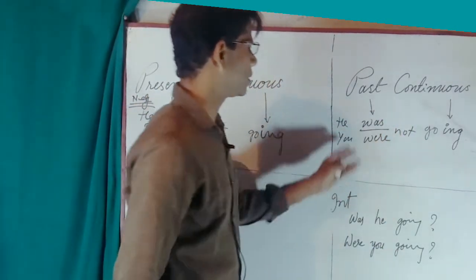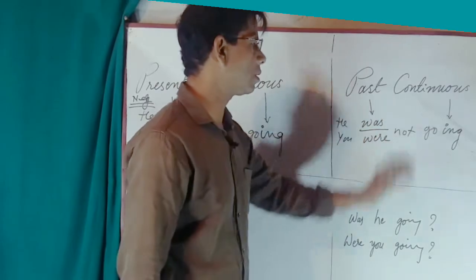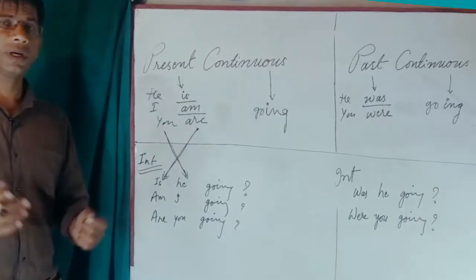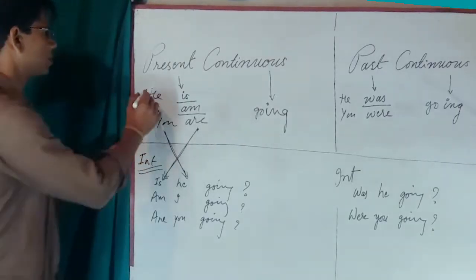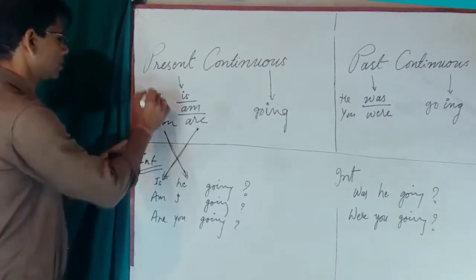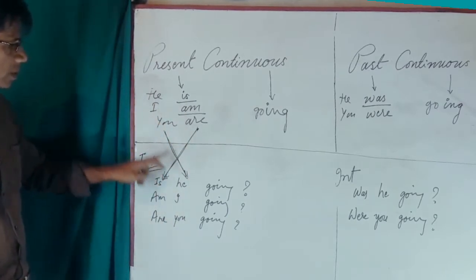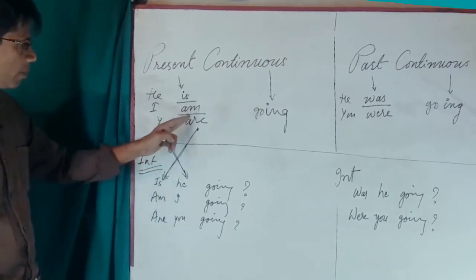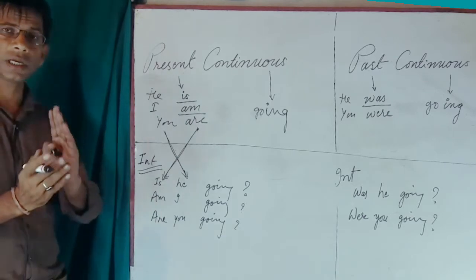In past continuous negative, 'not' also goes at the third place: he was not going, you were not going. Now, what happens in interrogative sentences? The subject goes in place of the helping verb, and the helping verb goes in place of the subject.